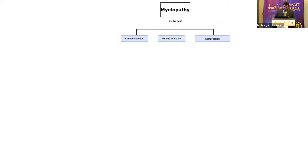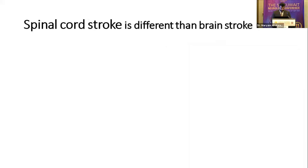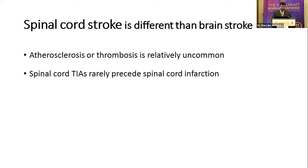Once we are considering myelopathy, we must rule out compression and vascular myelopathy. In spinal cord infarction, there is a critical time-to-treatment consideration, as delays can result in poor prognosis. Immunotherapies we commonly use can be harmful in some cases of vascular myelopathy, and vascular myelopathies are frequently misdiagnosed as transverse myelitis. Compared to brain stroke, atherosclerosis and thrombosis are relatively uncommon in spinal cord stroke, and TIAs rarely precede acute spinal cord vasculopathy.